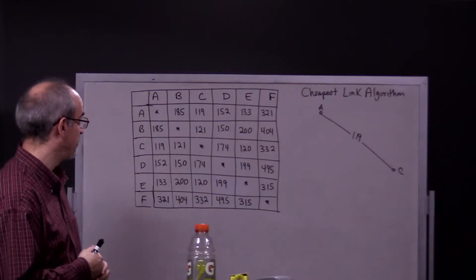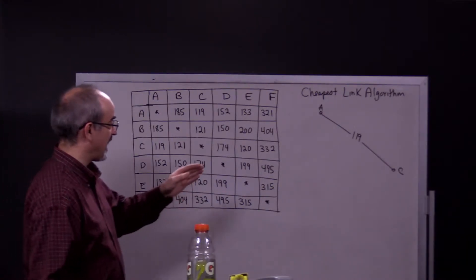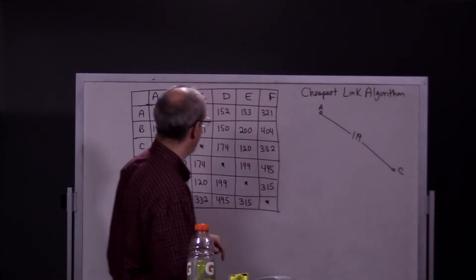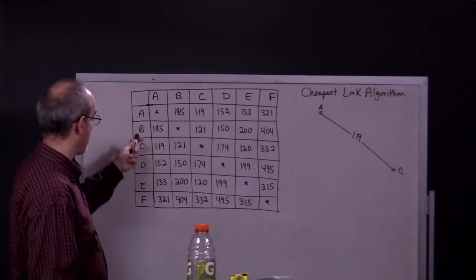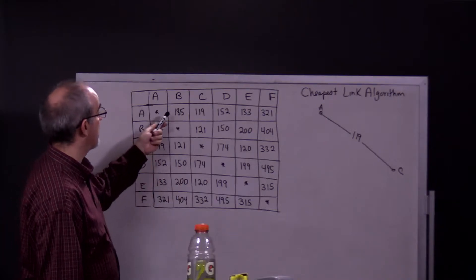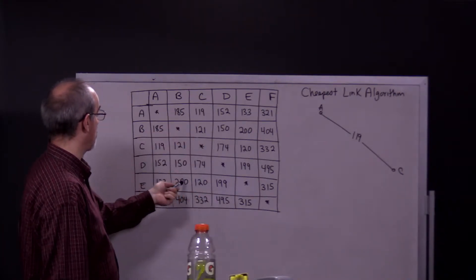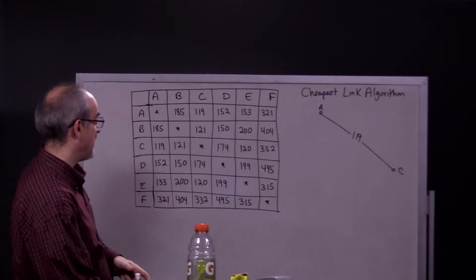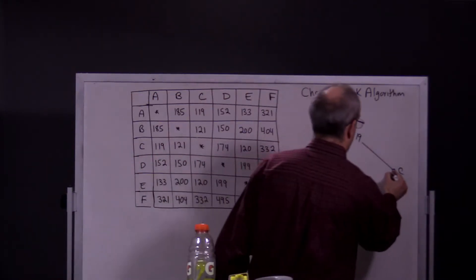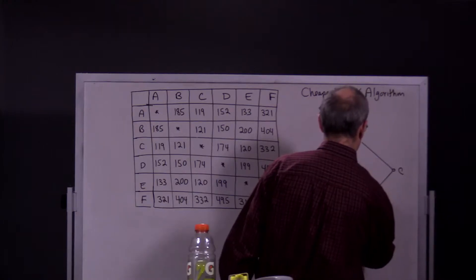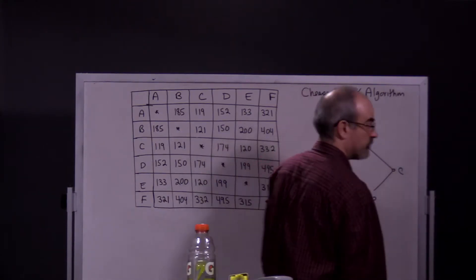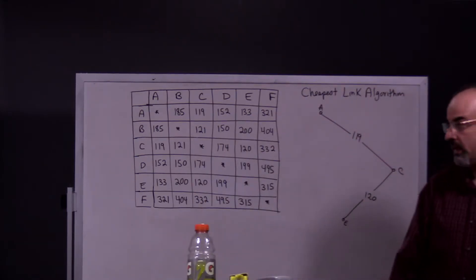So we've gotten our first edge, it's A to C which has a weight of 119. We're going to look for our next shortest edge which is 120. C to E. So we're going to draw that.